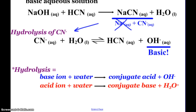Here is a definition for hydrolysis. If you have a base ion reacting with water, you'll form the conjugate acid and hydroxide ions — that's how we know we'll have a basic salt solution. If you have an acid ion reacting with water, you get the conjugate base and hydronium ions, so our salt solution will be acidic.